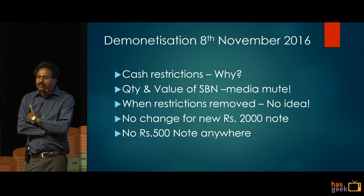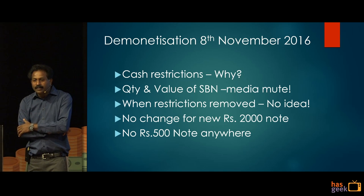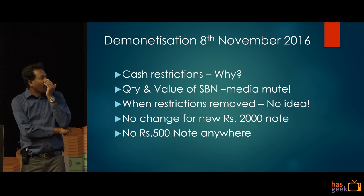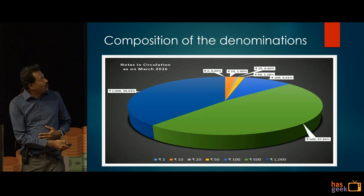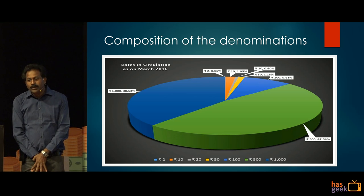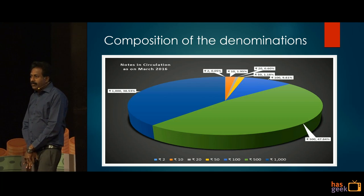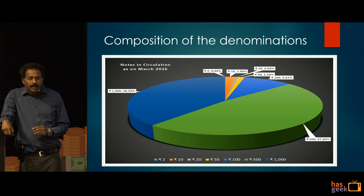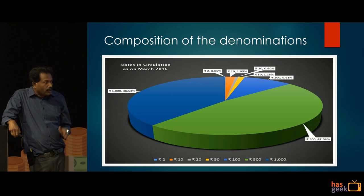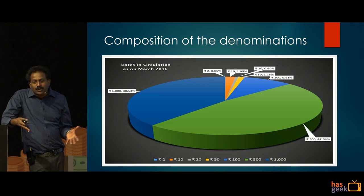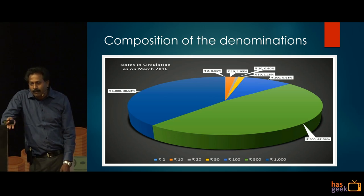Now it's a 2000-rupee note and the next denomination is 100, so you need 20 hundred-rupee notes. I hadn't seen any 500-rupee note anywhere. That forced me to look into the data. I always believe when dealing with issues you should look at the actual data and ask questions directly from that, instead of relying on someone else's data.